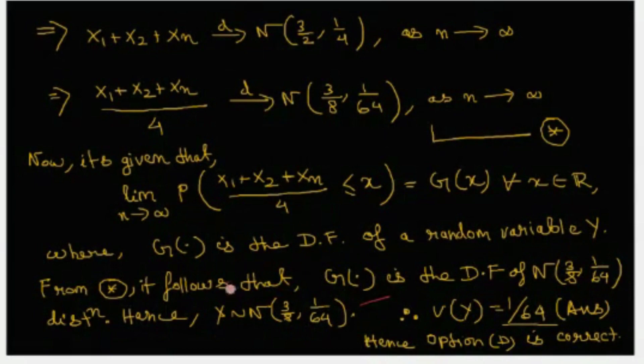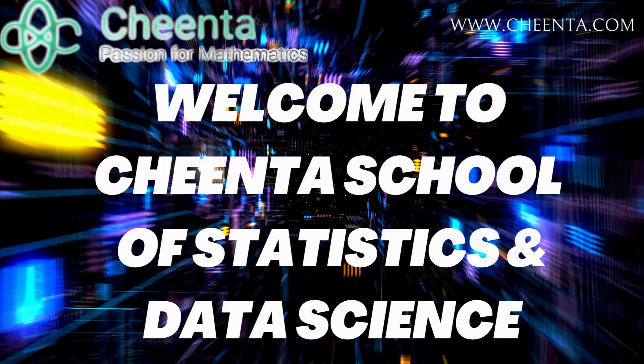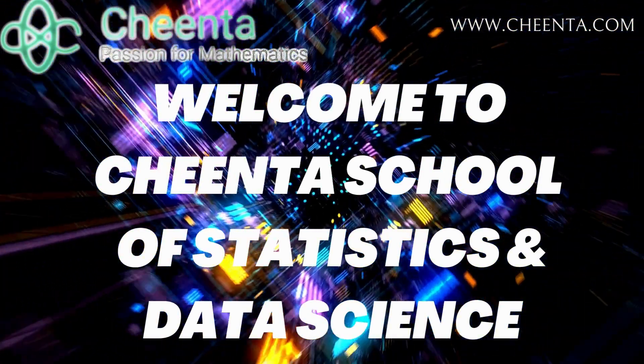Hence we can say that y follows normal 3/8, 1/64 as y has the distribution function g. Therefore, it is very straightforward that the variance of y is 1/64, hence option D is correct in this case. Hello guys, welcome to Chinta School of Statistics and Data Science.